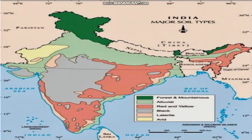Hello students, today we will discuss about the major soil types found in India. Soil is generally classified on the basis of color and texture, and on this basis it is distributed in India. The major types include alluvial soil, black soil, red soil, arid soil, laterite soil, etc. So let us discuss in detail.